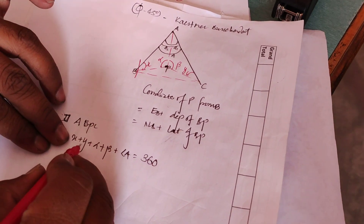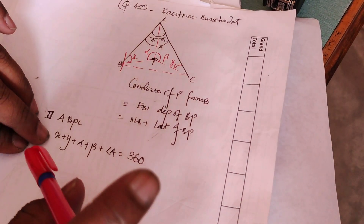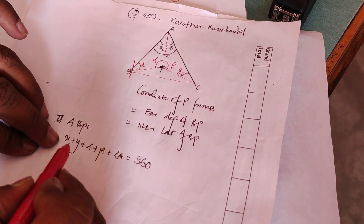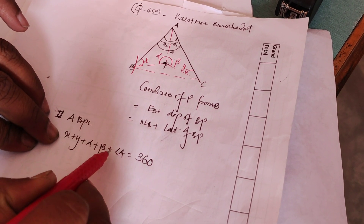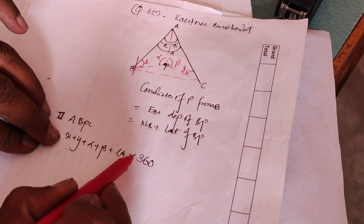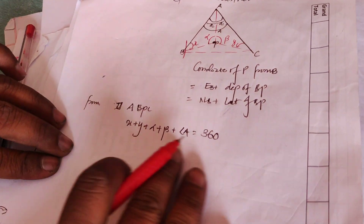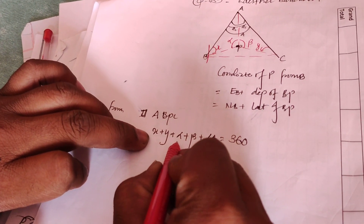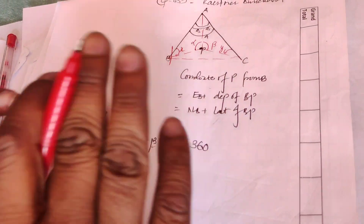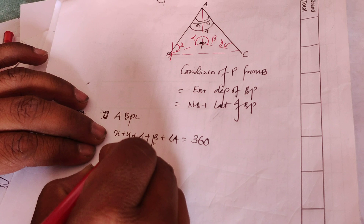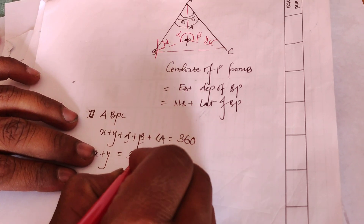So we have to take the term x plus y. Alpha plus beta plus angle A is equal to this. We have to take the term of alpha, beta, and angle A. So what is the value of x plus y? It is equal to 360 degrees minus j.